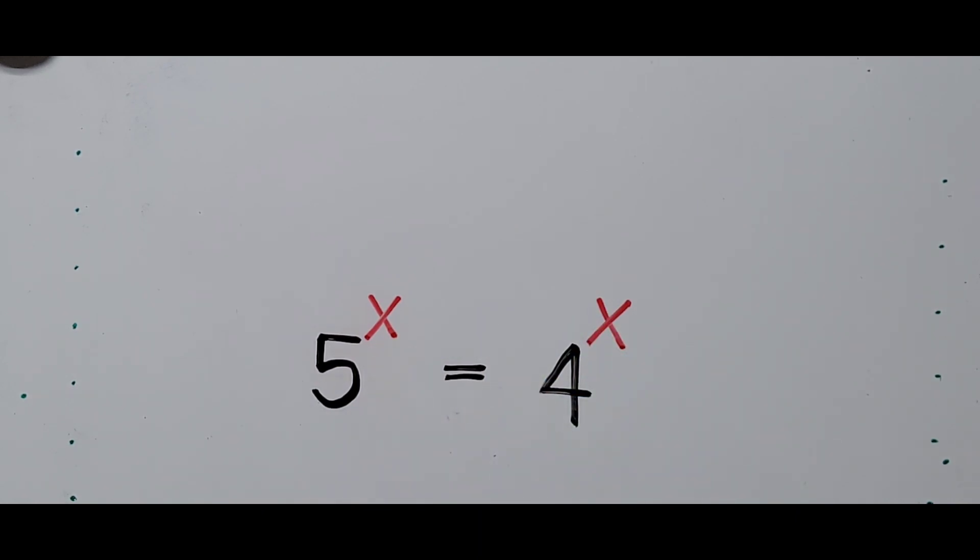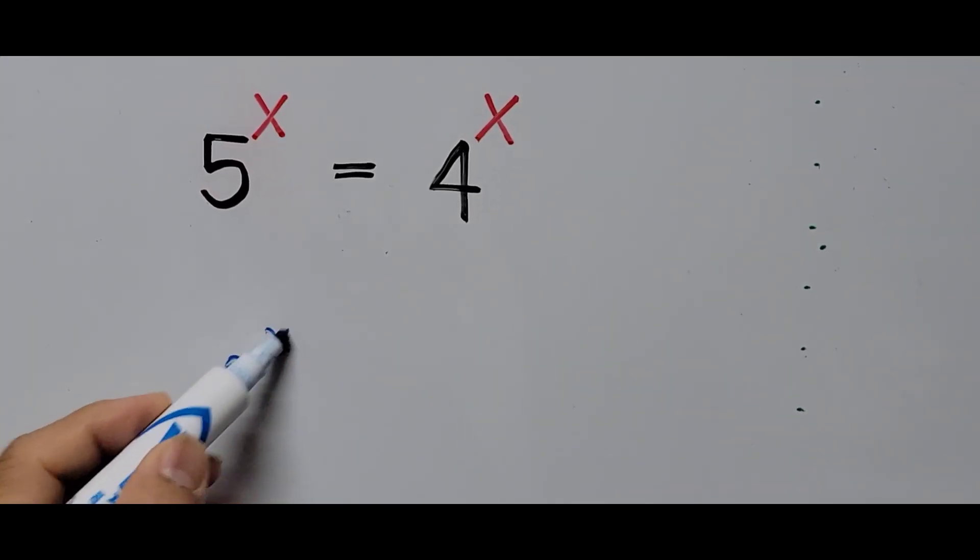5 raised to 0 is 1 and 4 raised to 0 is 1, which justifies that the value of X equals 0. So how can you prove it?